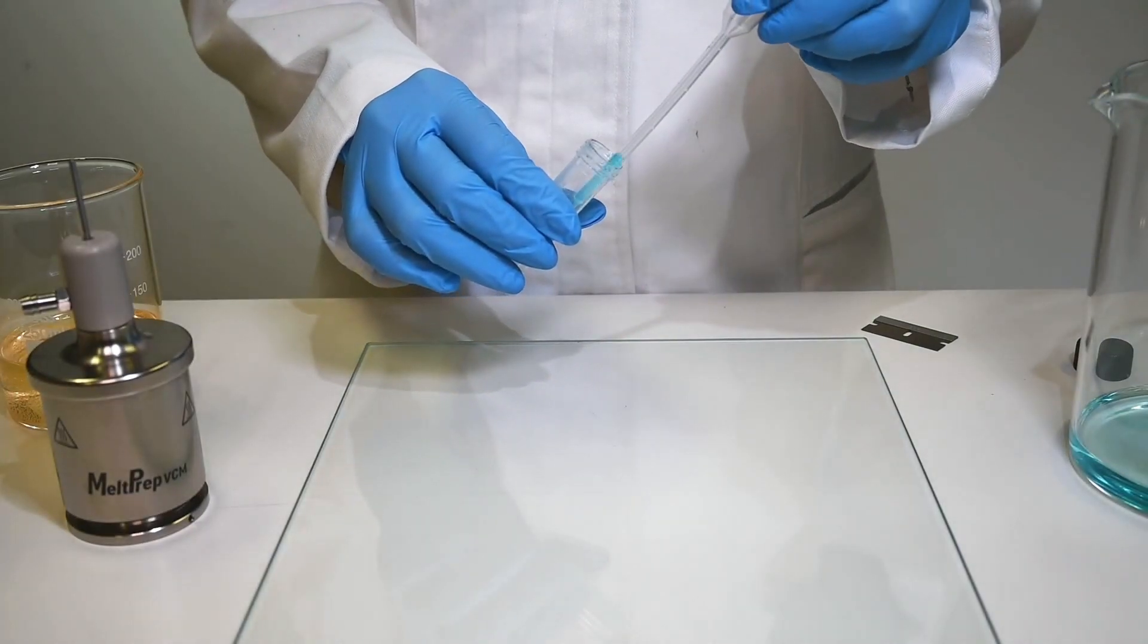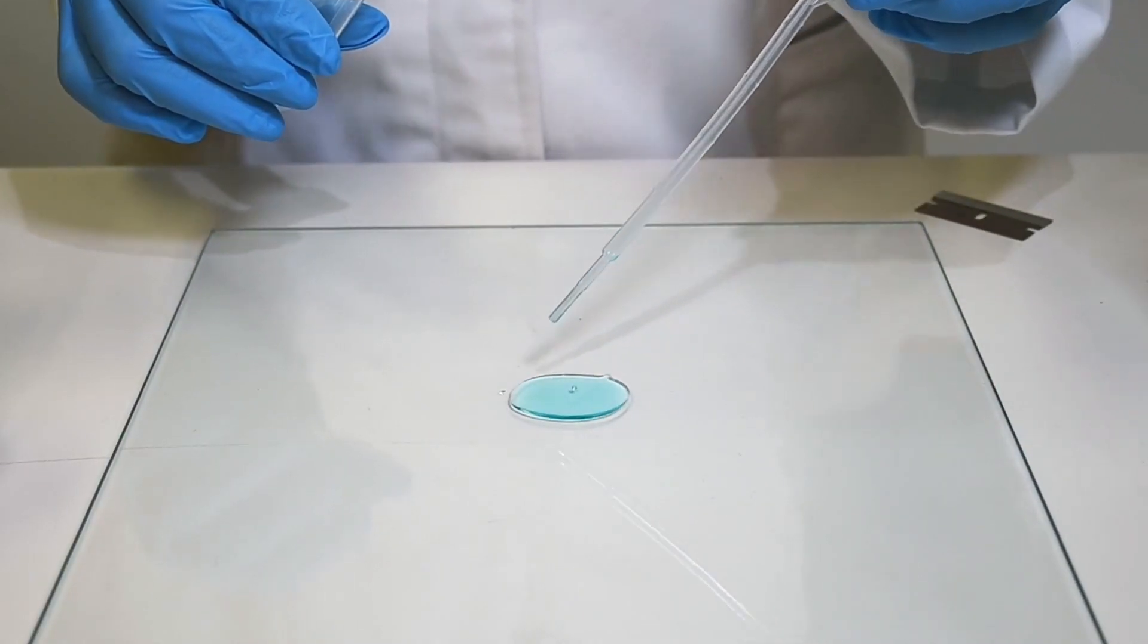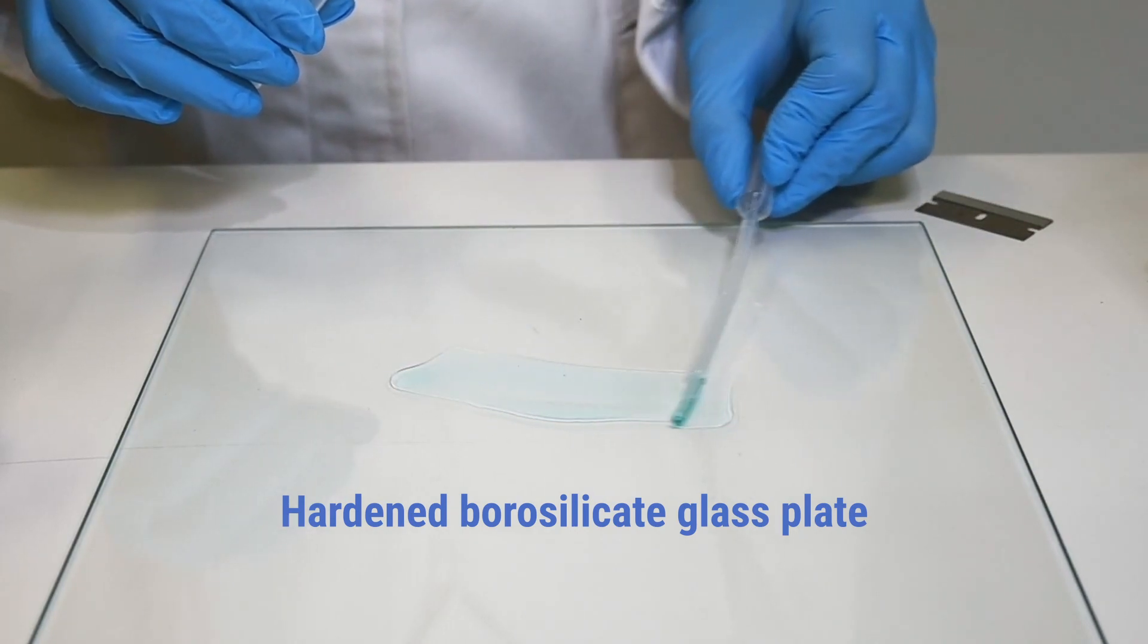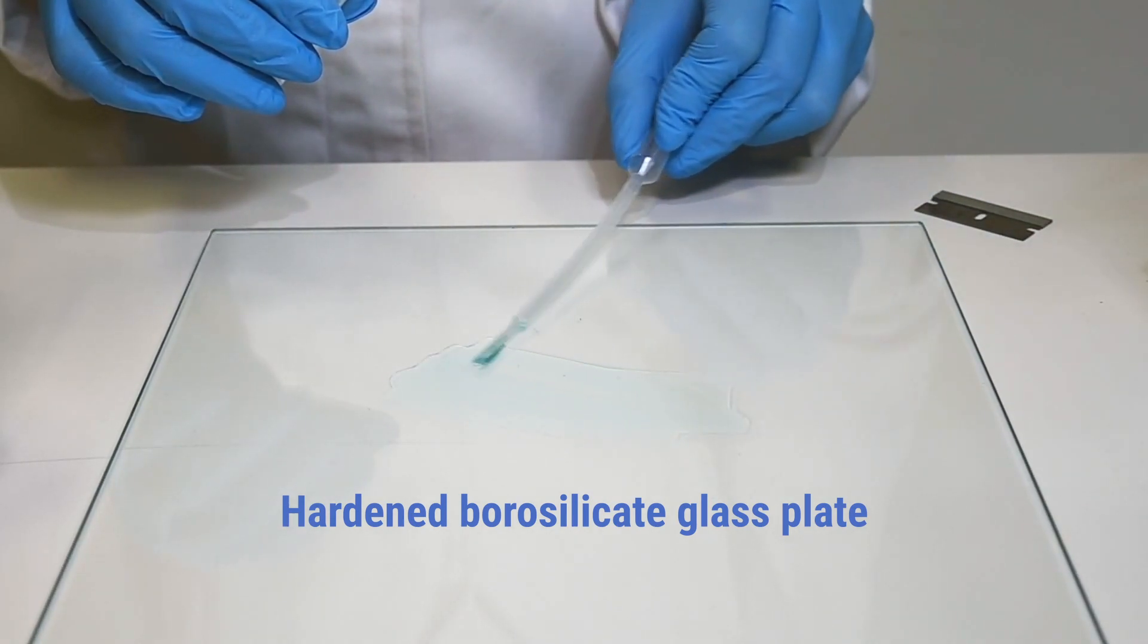Transfer the solution onto a flat glass plate and spread it into a thin layer. The thinner the layer, the faster the drying and the more uniform the resulting film.